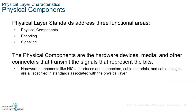These organizations dictate how the NIC should encapsulate the data into a frame and place it onto the wire, what type of wire or wireless signal needs to be transmitting, and how those signals are going to be transmitted. The Physical Layer addresses three function areas: the Physical Components — the things that you touch and feel — encoding, and signaling.